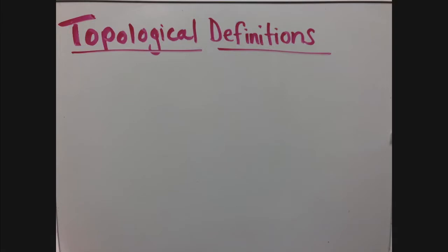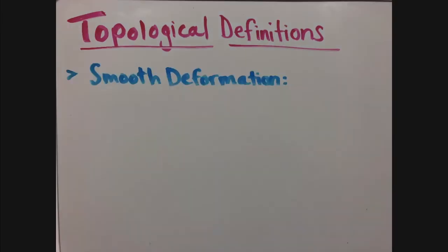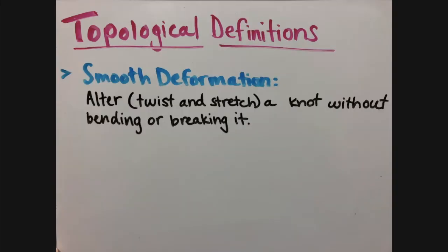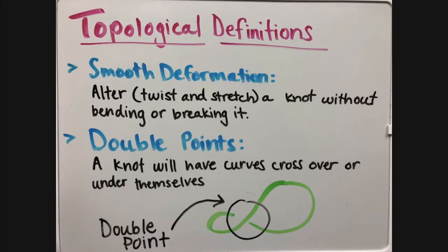Now look at some topological definitions to help us better understand these knots. Two knots are considered to be the same if one can be smoothly deformed into the other, meaning altered without cutting or breaking the knot. And at certain spots in a knot projection, a curve will cross over or under itself. These crossing points are called double points.